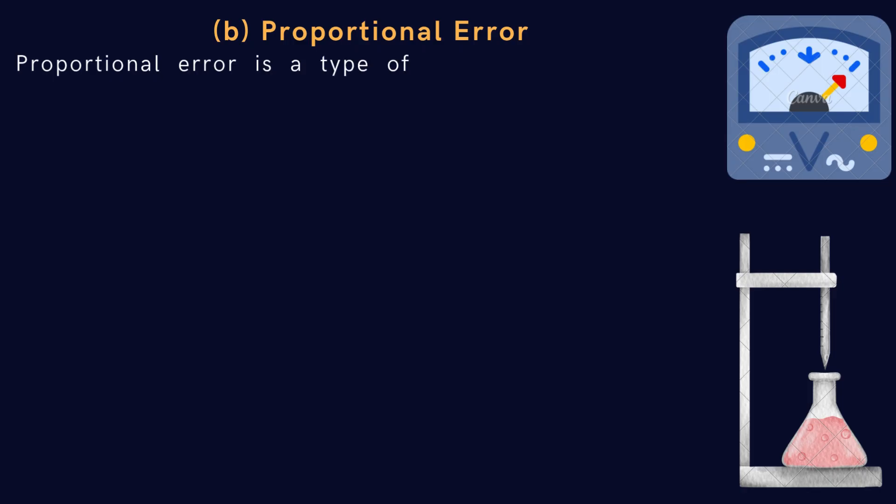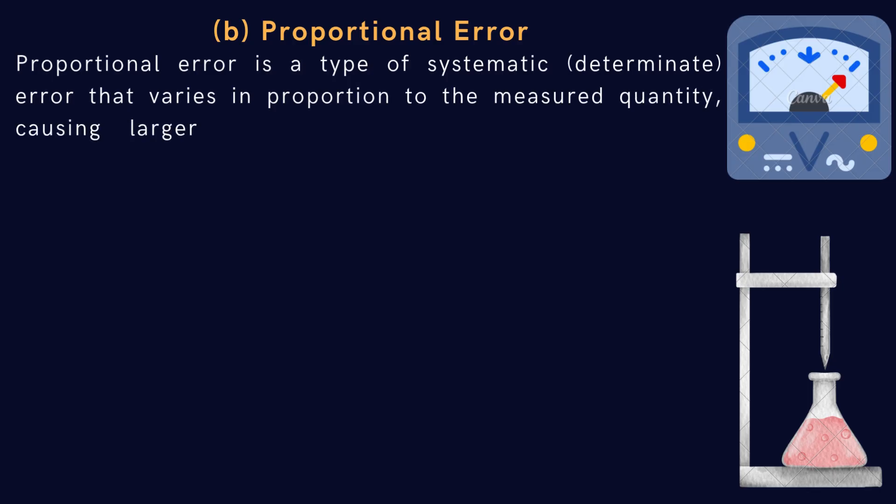Let's learn about proportional error, another type of systematic or determinate error. Proportional error is a type of systematic, determinate error that varies in proportion to the measured quantity, causing larger deviations as the magnitude of the measurement increases.